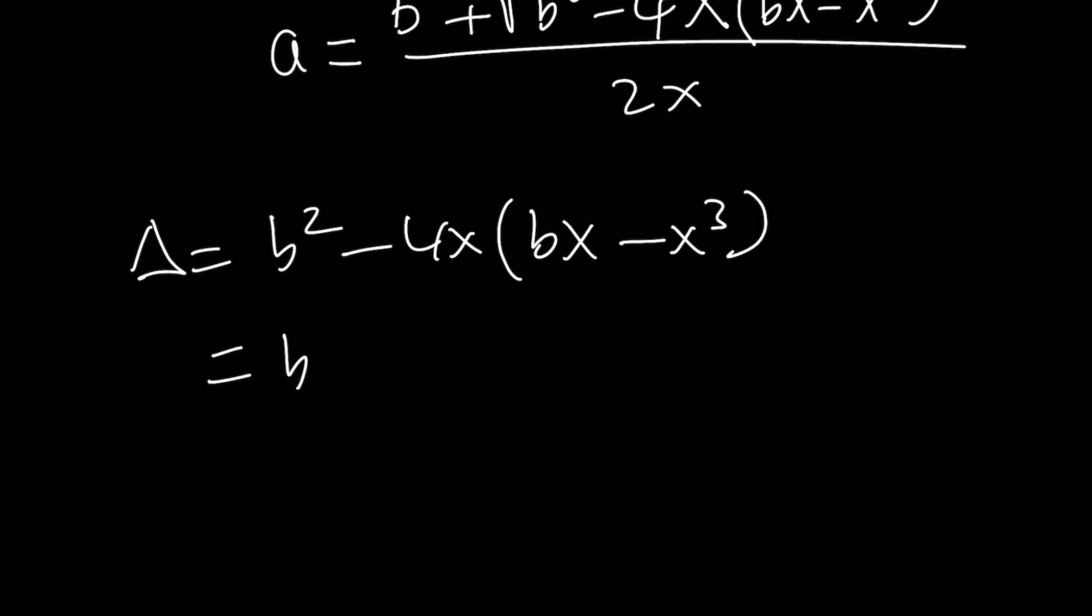So this can be written as b²-4bx²+4x⁴. And why did I say this is awesome? Because this is a perfect square. And isn't that perfect? Like, think about it. This can be written as (b-2x²)².